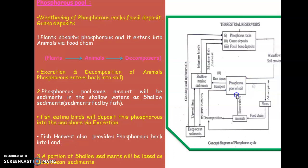However, another part of the phosphorus moves in a different way. A small portion of this soil phosphorus is carried by runoff water into the sea, where it is deposited as shallow marine sediments. In the sea, fish consume these phosphate sediments, and the phosphorus becomes part of their body.